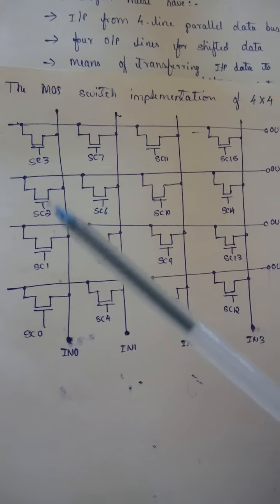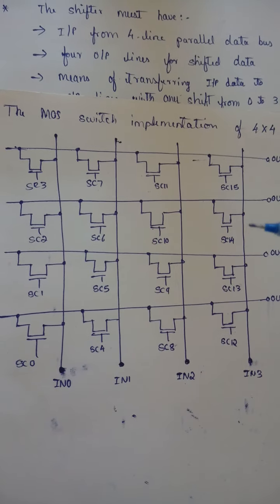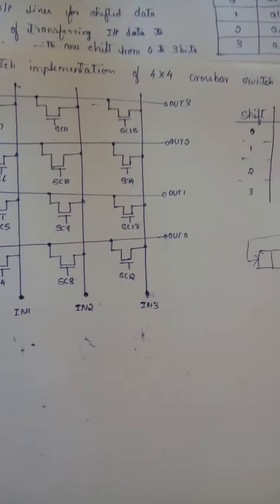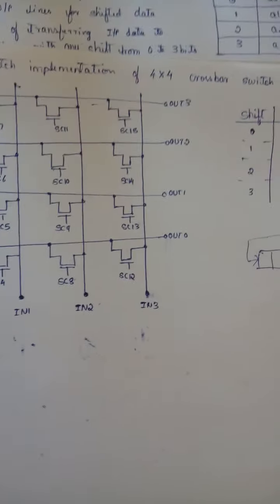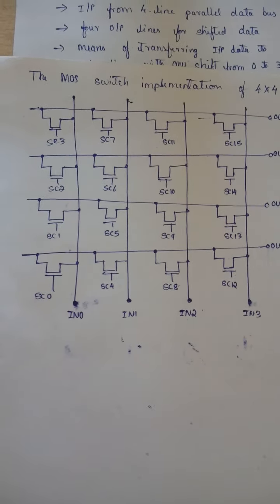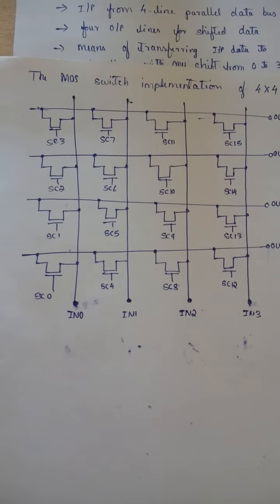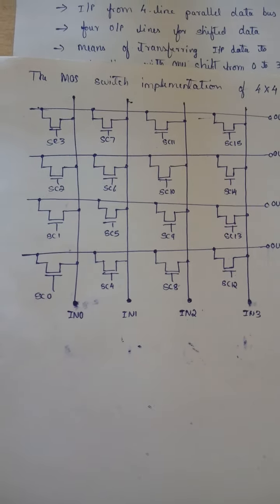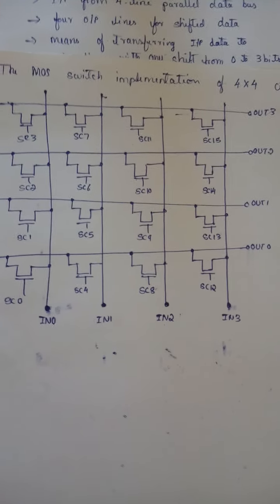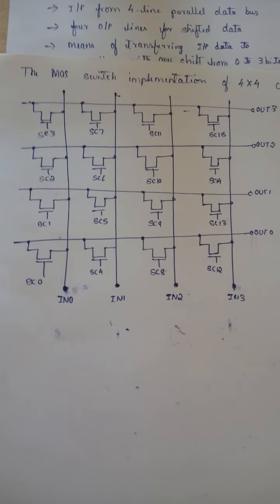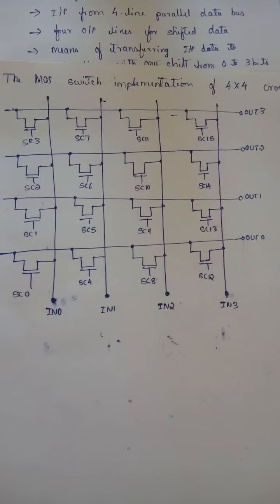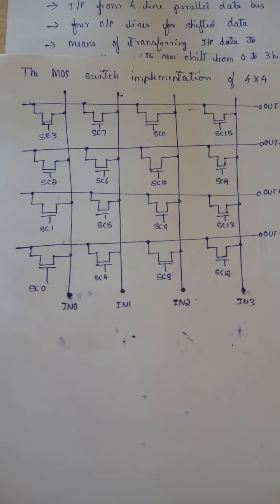When designing we make use of pass transistors. The MOS switch implementation of a 4×4 crossbar switch is as shown here. You have rows and columns — the columns are called input 0, input 1, input 2, and input 3, and the rows are called output 0, output 1, output 2, and output 3. There are 16 switches in total, connected in a crossbar format.